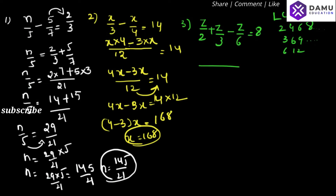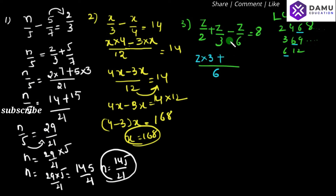The least common multiple of 2, 3, and 6 is 6. What we have to multiply with 2 to get 6 is 3 (into z), what we have to multiply with 3 to get 6 is 2 (into z), and for 6 it is already 1 (into z). So this will be equal to 8.